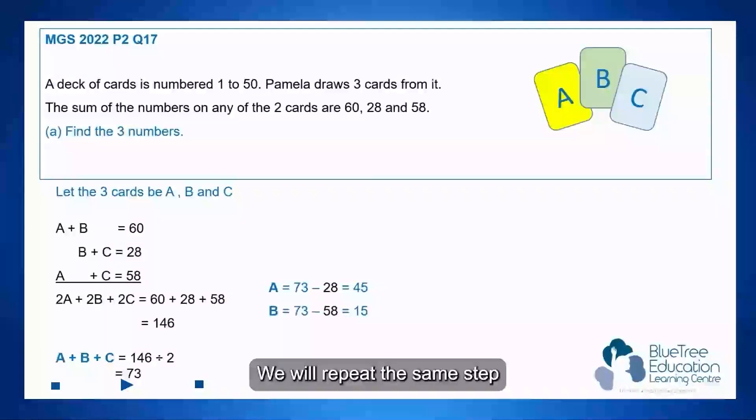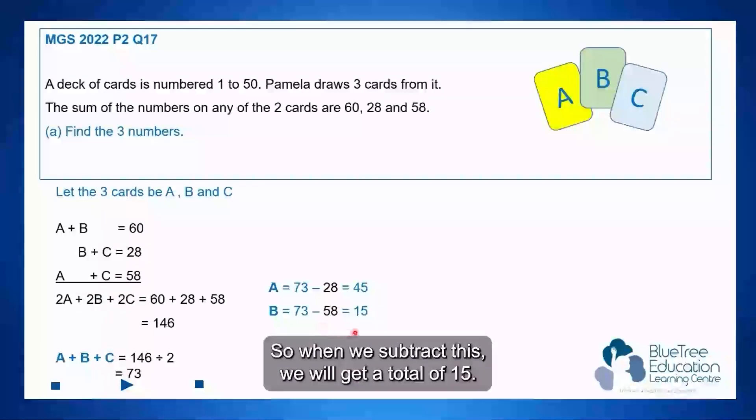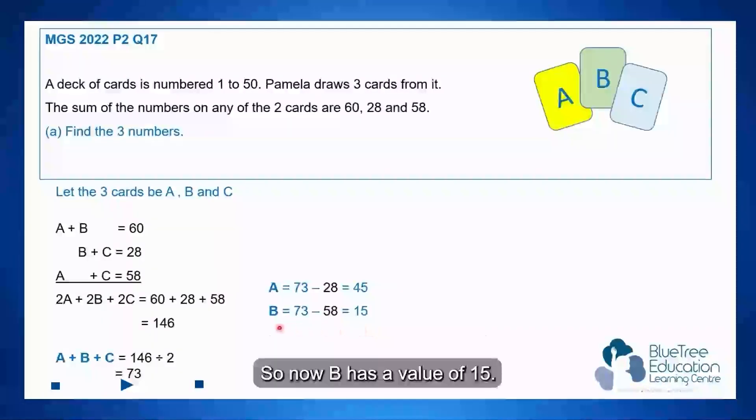We will repeat the same step to find the value of the B card, which is the 73, the total minus 58. Can you see A plus C is equal to 58? So when we subtract this, we will get a total of 15. So now B has a value of 15.